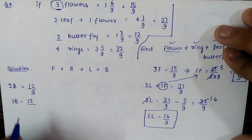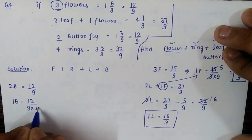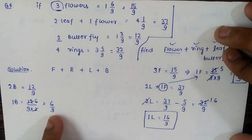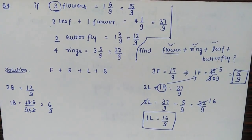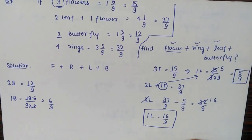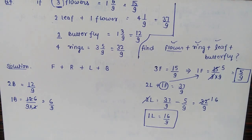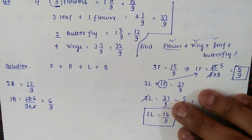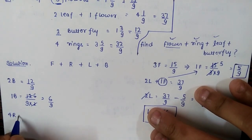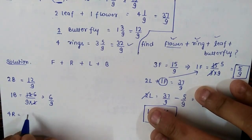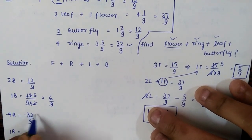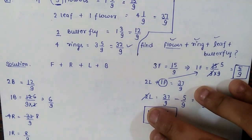Two butterflies equal 12/9, so one butterfly equals 12/9 divided by 2, which is 6/9. I'll keep the denominator as 9 so all fractions are easily added. Four rings equal 32/9, so one ring equals 8/9.